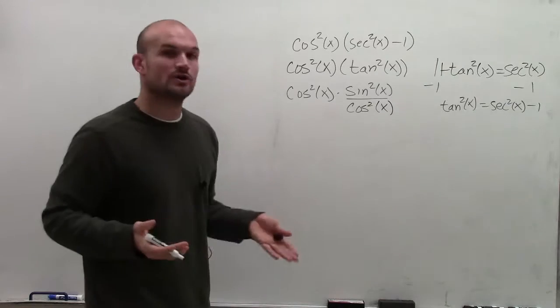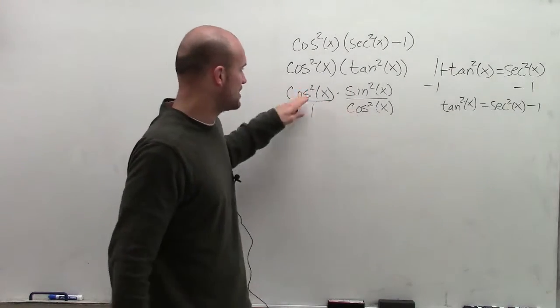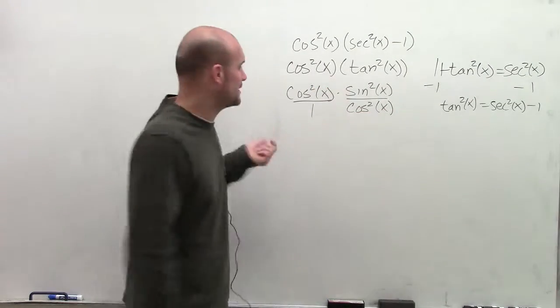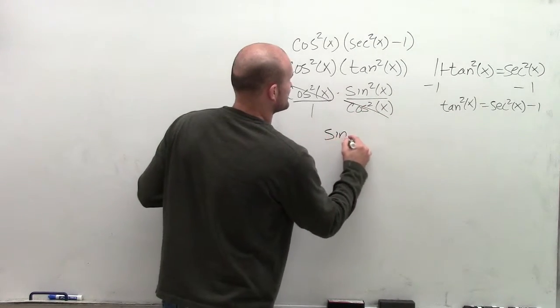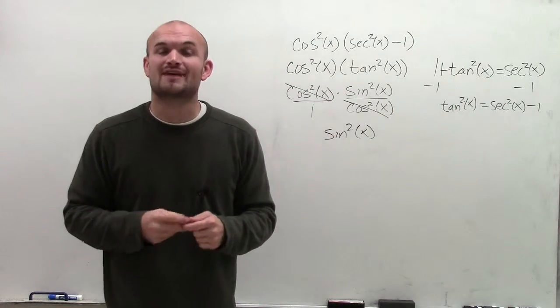And now what you notice is when I multiply this through, I have a cosine squared of x on my numerator and a cosine squared of x as the denominator. Therefore, these simply divide out to give me 1, leaving me with the sine squared of x as my final simplified solution.